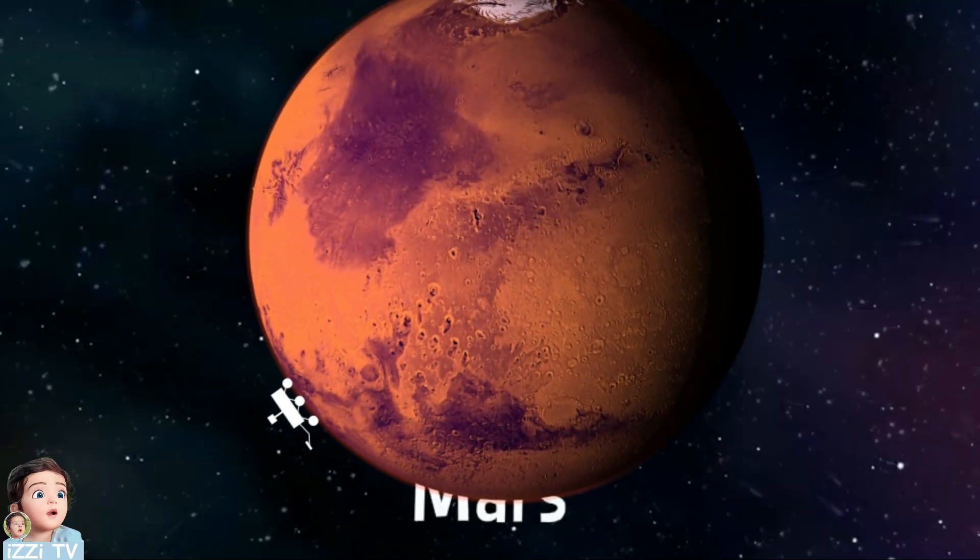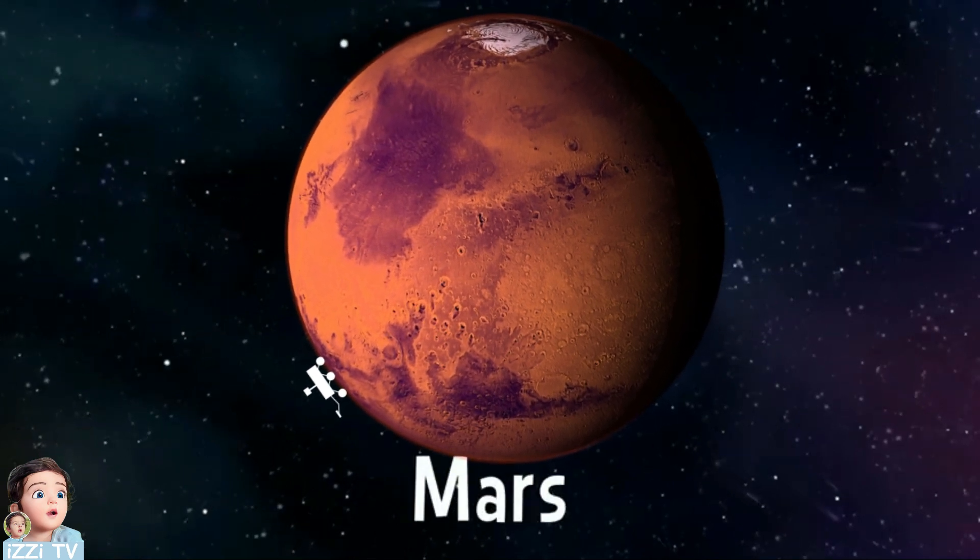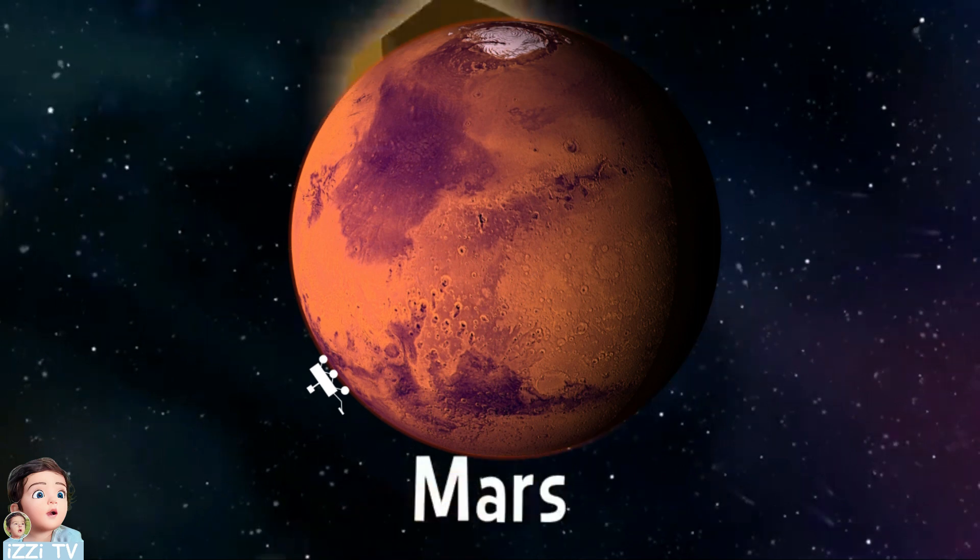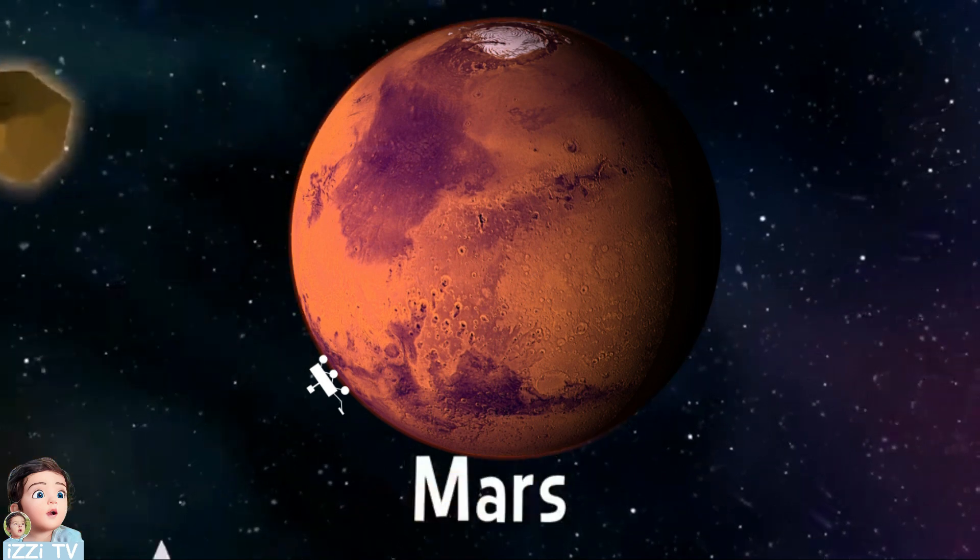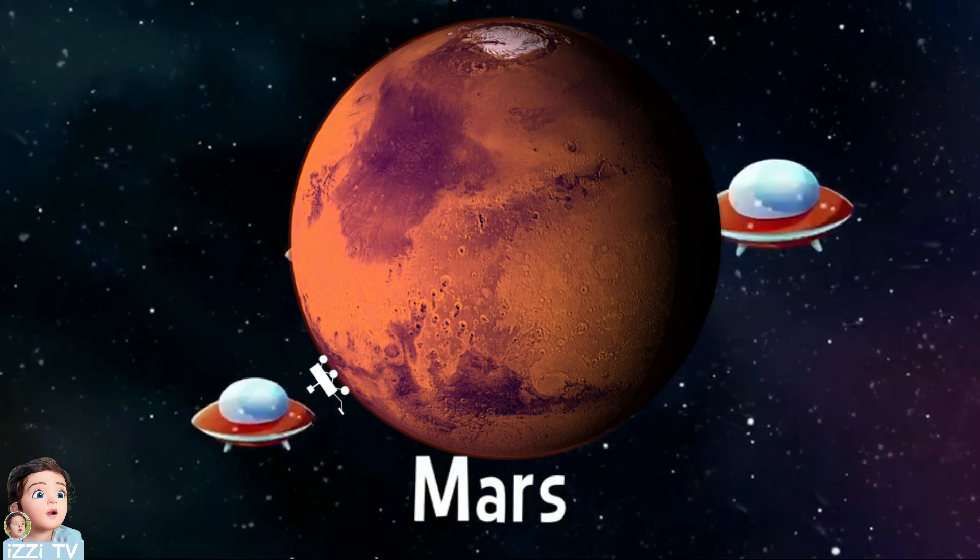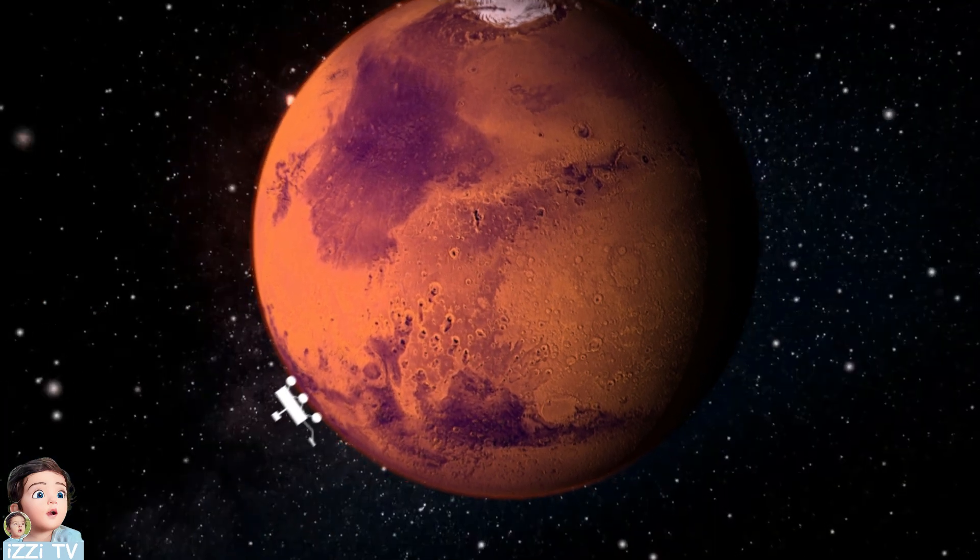Mars is the fourth planet in the solar system. It is sometimes called the red planet. Mars is made of rock, and there you can find the tallest mountains in the solar system. Also, Martians are from here. No, I'm kidding. There are no Martians.